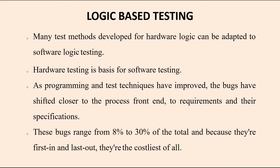As programming and test techniques have improved, bugs have shifted closer to the process front end — to requirements and their specifications. We can clearly view from the front end what bugs are to be analyzed and caught. These bugs normally range from 8% to 30% of the total. They are first in, last out, and bug identification is one of the costliest techniques among all.